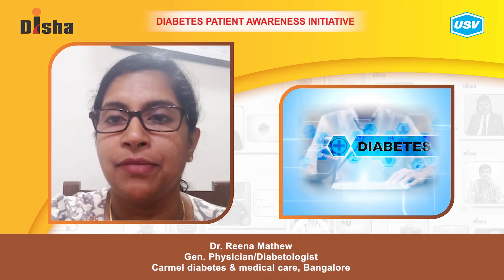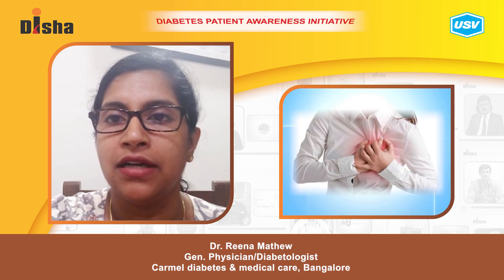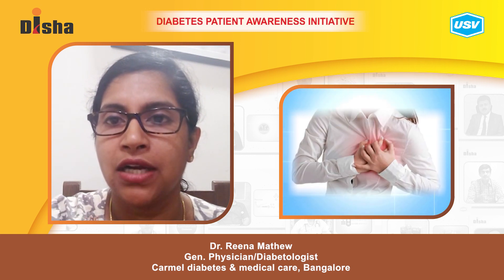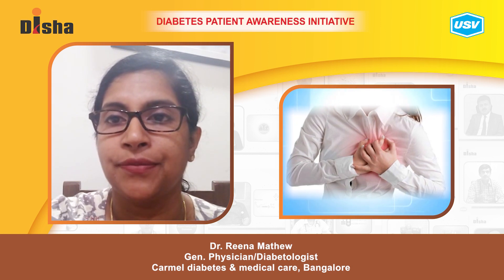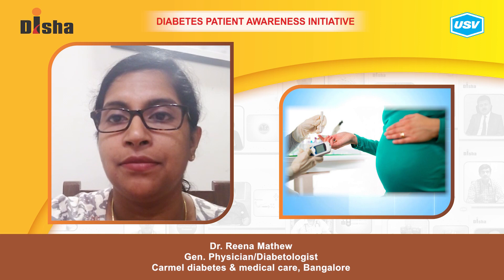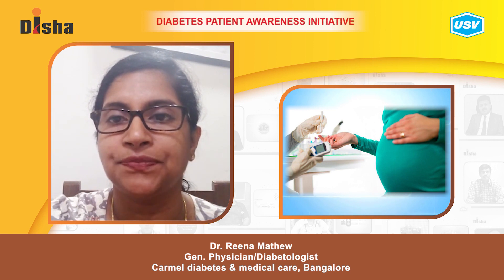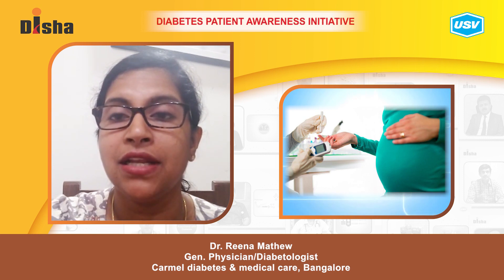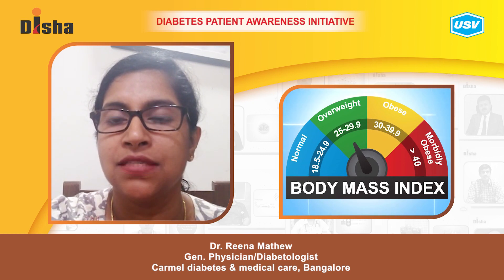Diabetes affects women and men in equal numbers, but women develop a lot more cardiovascular complications at a younger age compared to women without diabetes. Diabetes in pregnancy causes a lot of miscarriages, growth anomalies, and a higher number of C-sections. Women are at higher risk of developing diabetes if their BMI is more than 23 along with one or more risk factors.